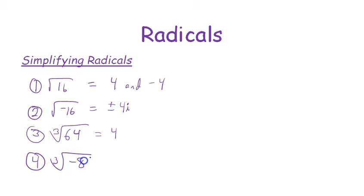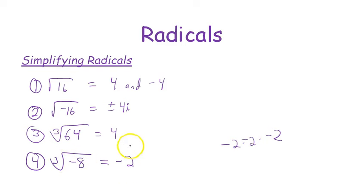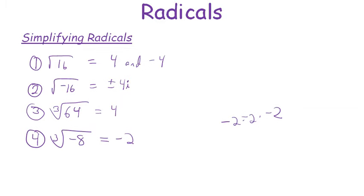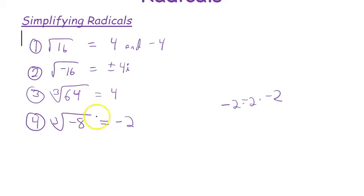Now let's do a cube root of a negative number: the cube root of negative 8. What times itself three times gives you negative 8? That's negative 2. Negative 2 times negative 2 is positive, but times another negative is negative. So the cube root of a negative is a negative, not an i.